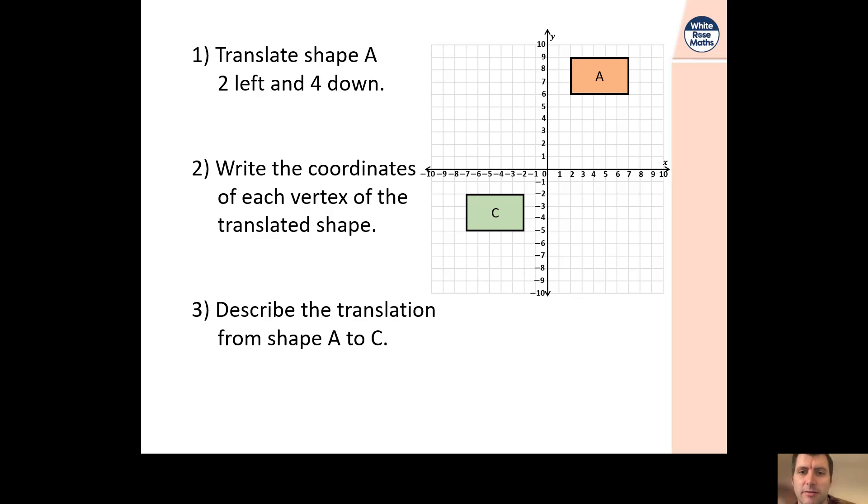Refreshing ourselves from yesterday, we're thinking about translation. Translation is that movement idea where A is moved 2 left and 4 down. Sorry, I've said that wrong. Could you first write down what the points are for A, and then if A was translated 2 left and 4 down, what would its new points be? Then write down the points for the translation from A to C. So two elements. Pause it while you do that.